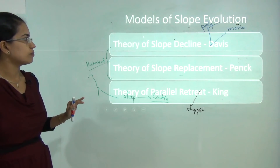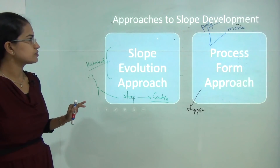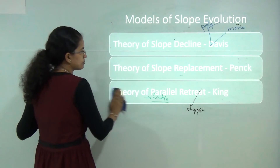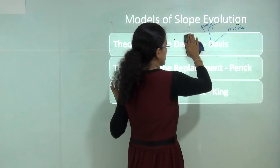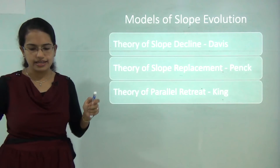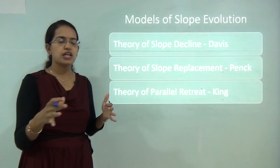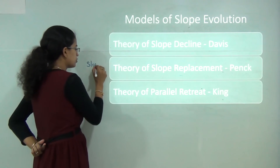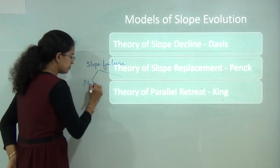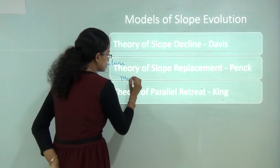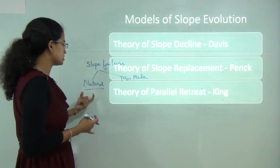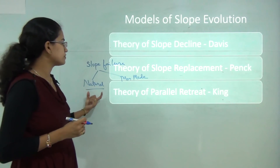The next topic is models of slope evolution, which can be classified into three types: the theory of slope decline, slope replacement, and parallel retreat. Before discussing those, let us understand slope failure. Slope failure means the sudden removal of the slope. It can be due to natural causes such as earthquakes and volcanoes, which cause changes in or failure of the slope.